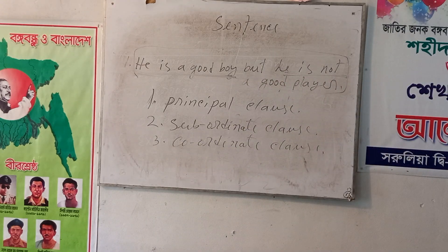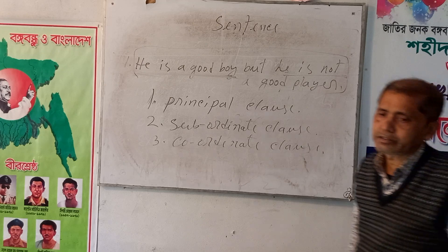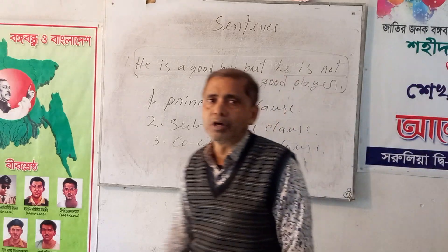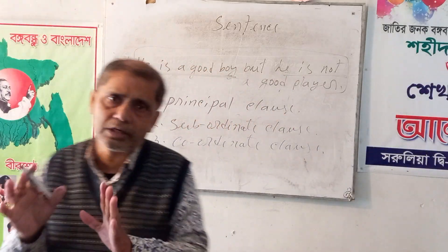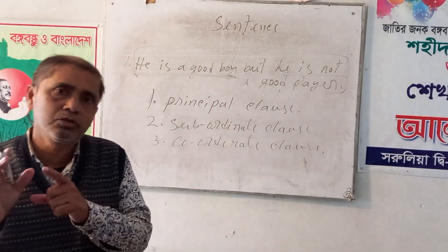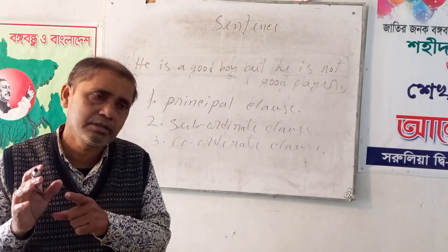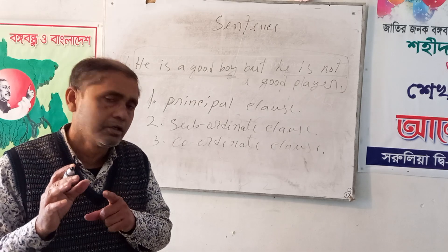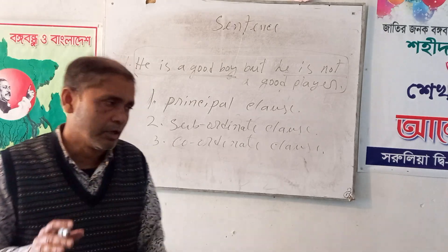There are three kinds of clauses in English. Number one: principal clause. Number two: subordinate clause. Number three: coordinate clause. I am giving examples of these.